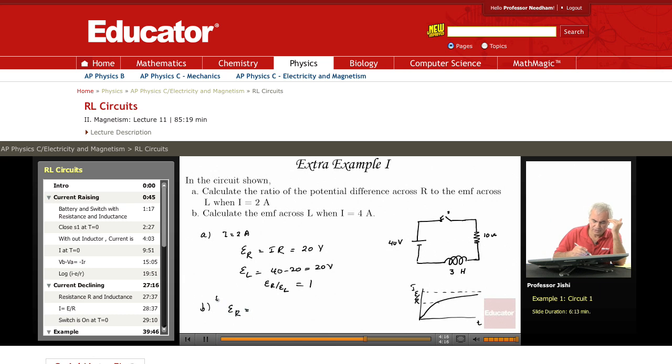So now I is 4 amperes, so ER is just 4 times 10, which is 40 volts. Since the battery has 40 volts, the 40 volts appear across R. So what is EMF across L? Zero.